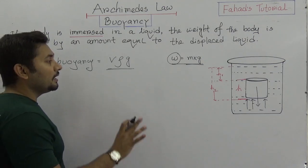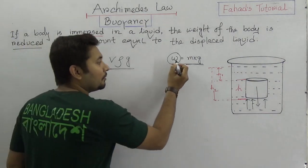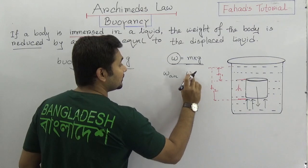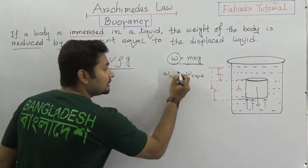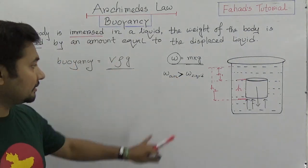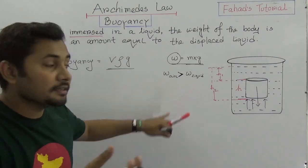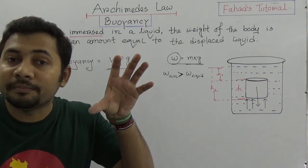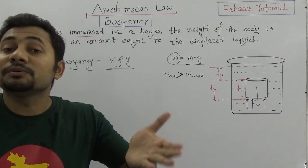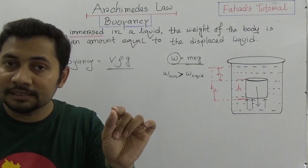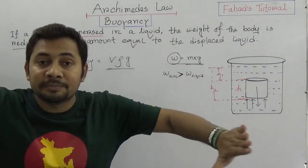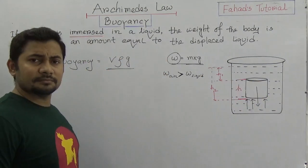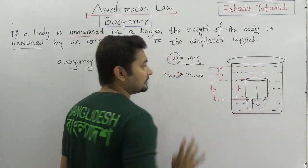Buoyancy is equal to V rho g. We also know that the weight of any object is equal to M times G — the mass of that object times the gravity, which is actually 9.8 meters per second squared. Now you think: the weight of the object in air is always greater than the weight of that object in any liquid. Because from Archimedes' law, we know that if any body is immersed into the water, then for the upthrust, it will lose some weight, and that lost weight is equal to the amount of water that it displaced.